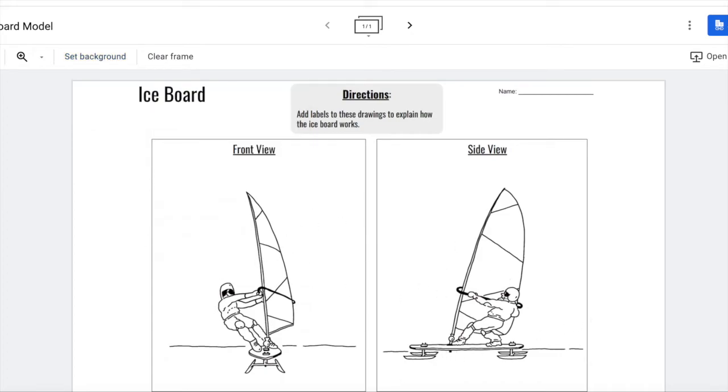But, having it in a jam board means you can use text boxes to type your thinking. And you can use the drawing tools to draw arrows and add things in that way. You're going to add labels and arrows and things like that to explain your thinking about how the ice board works.